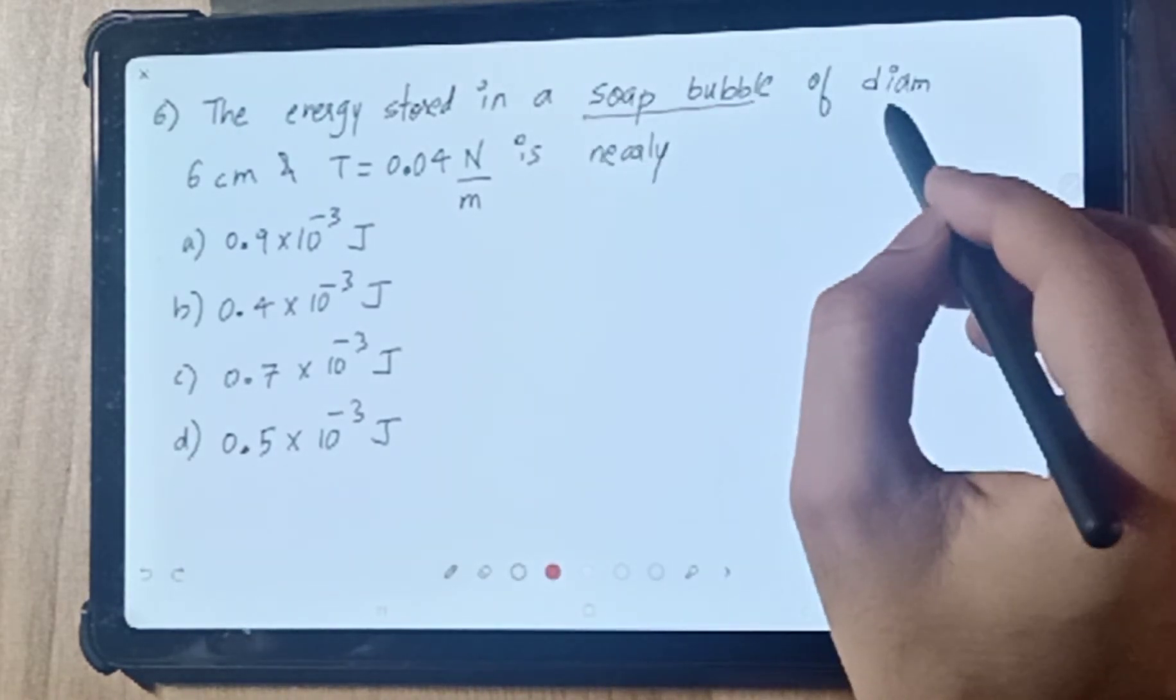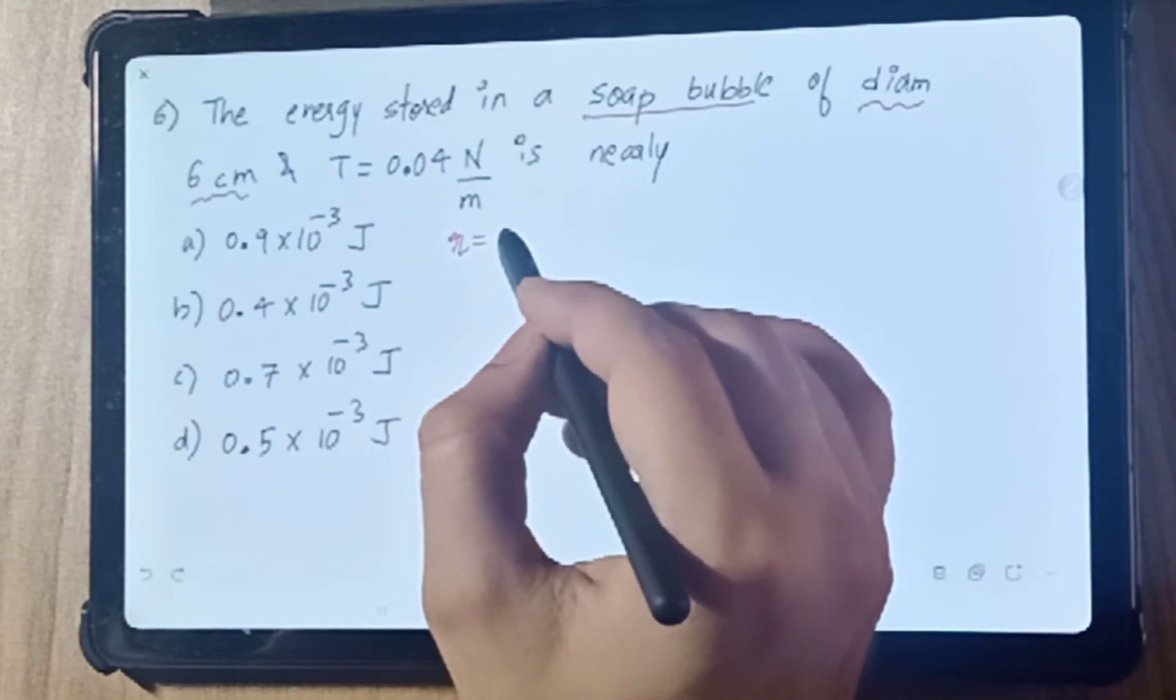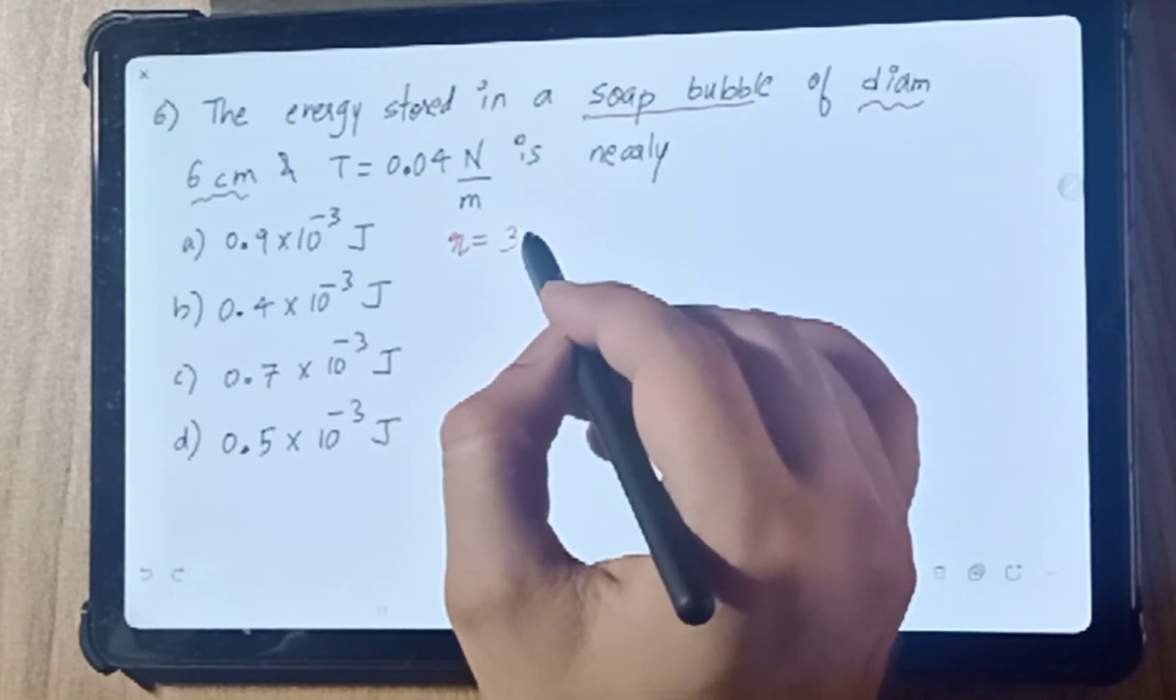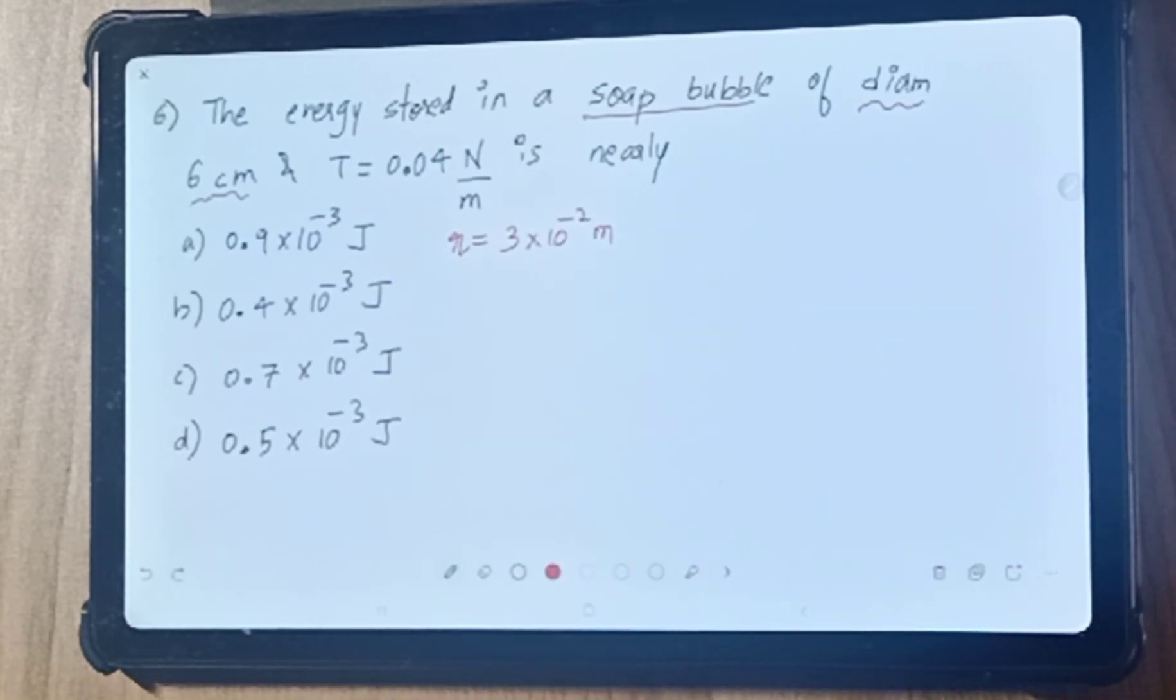So it's a bubble. Diameter is given as 6 cm. So radius will be half of 6, that is 3 cm, which equals 3 × 10⁻² meter.